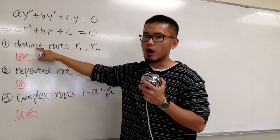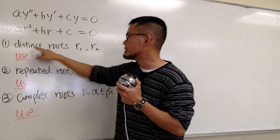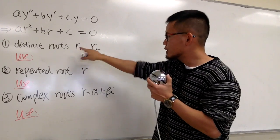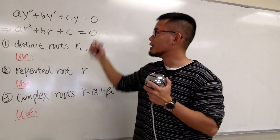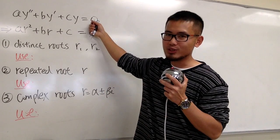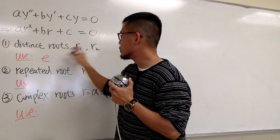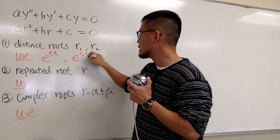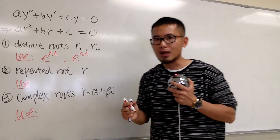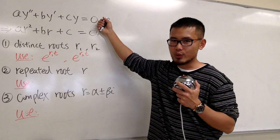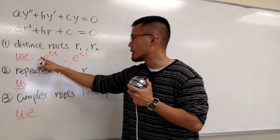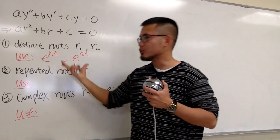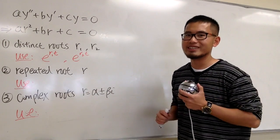The first possibility is we get two different r values, and we call them distinct roots — r1 and r2. If we find out these two r values, they will be the building blocks we use for the solution to this differential equation. We use e^(r1·t) and e^(r2·t) as building blocks, multiply by constants c1 and c2, and add them together to get the general solution.